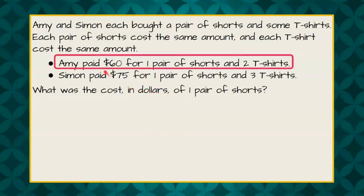We're going to identify that we need to write an equation for Amy and then an equation for Simon. Let's start with Amy. We know that Amy paid $60, and she bought one pair of shorts and two t-shirts for $60.